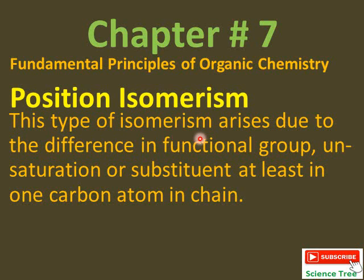This type of isomerism arises due to difference in functional group. Unsaturation means double bond or triple bond or substituent. It means that the branch formation is at least in one carbon atom in a chain. In other words, we can say that the chain length will not change of the parent chain in case of position isomerism. The parent chain will remain of the same length and the substituents and functional groups will change over it. They will change their position to give more new isomers.